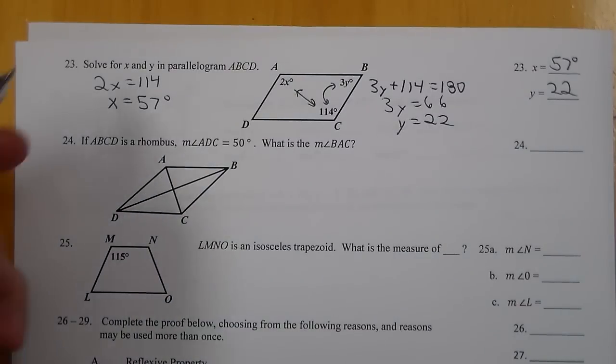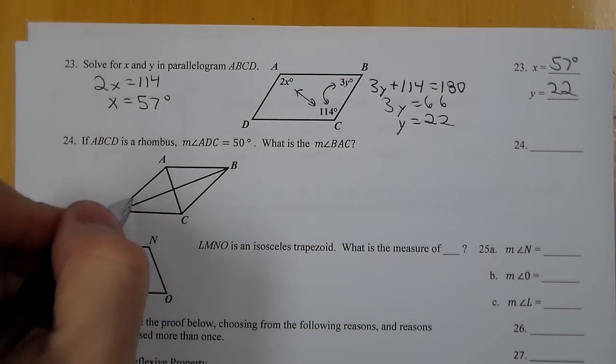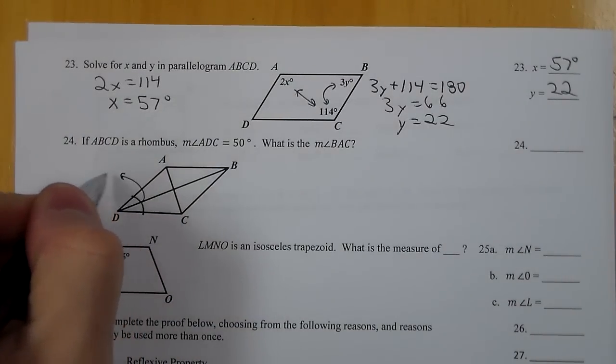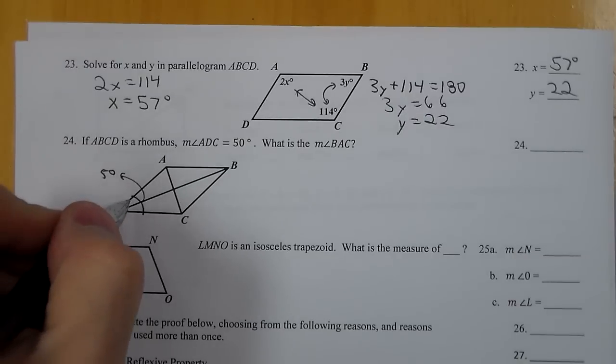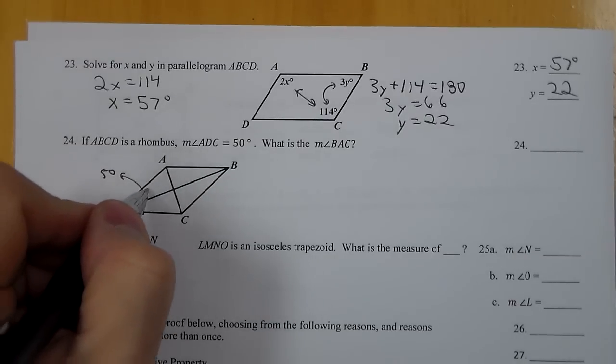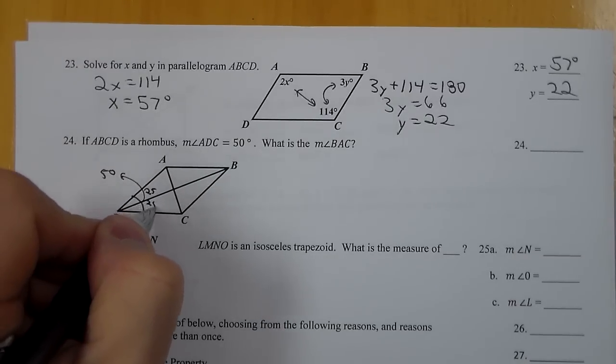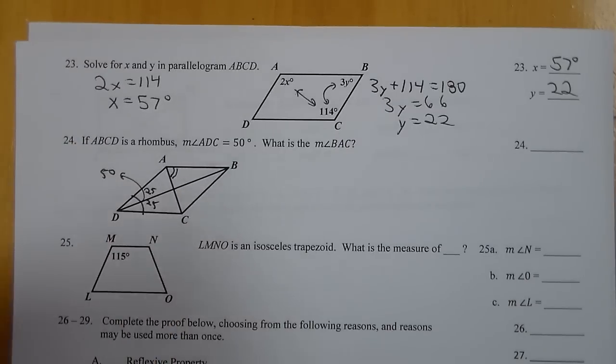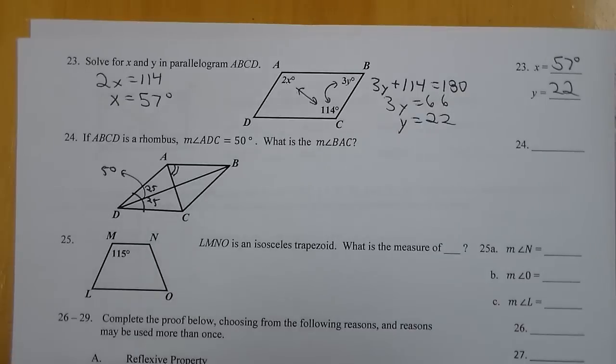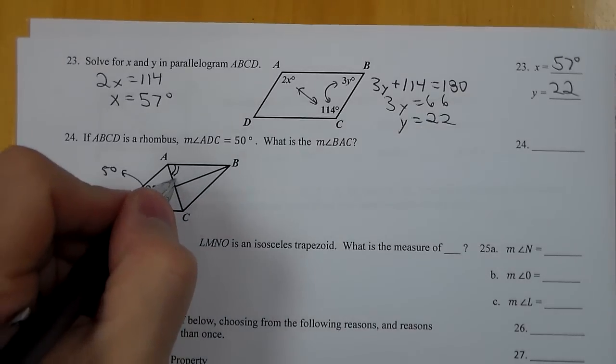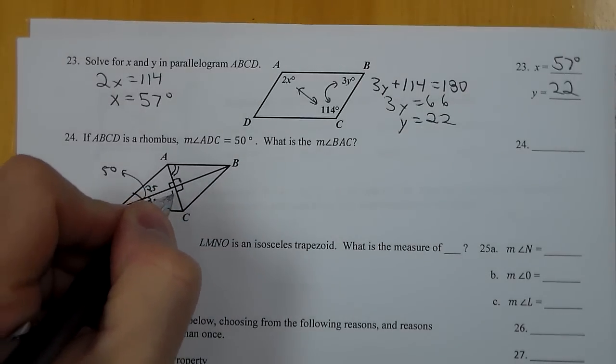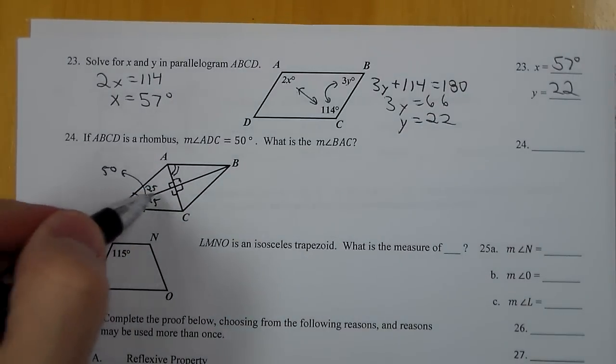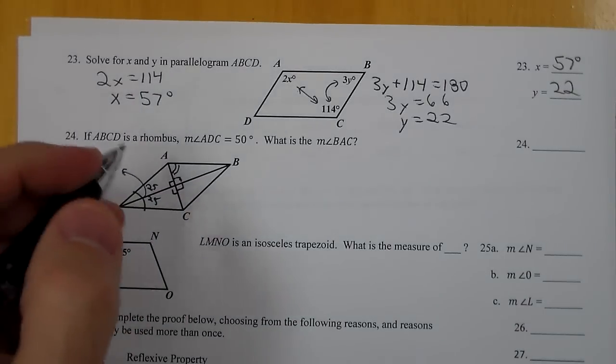For number 24, we know that angle ADC is 50 degrees. That means, since the diagonals bisect the angles, both of these are 25. So if we need to find angle BAC, we can kind of break this apart. Because anytime I see a rhombus, I actually think of it as four right triangles, and they're right triangles that kind of share sides that you could reflect around.